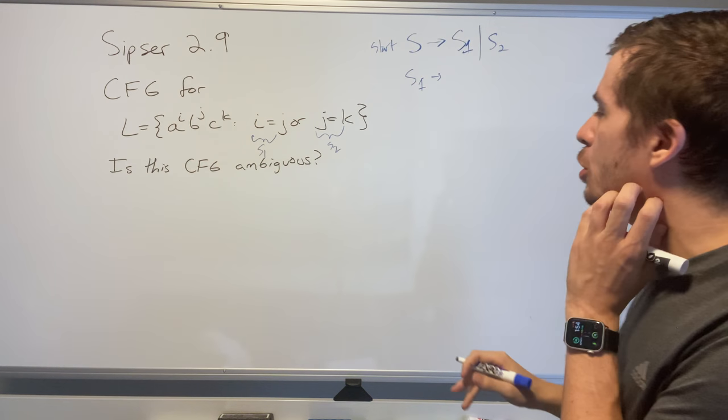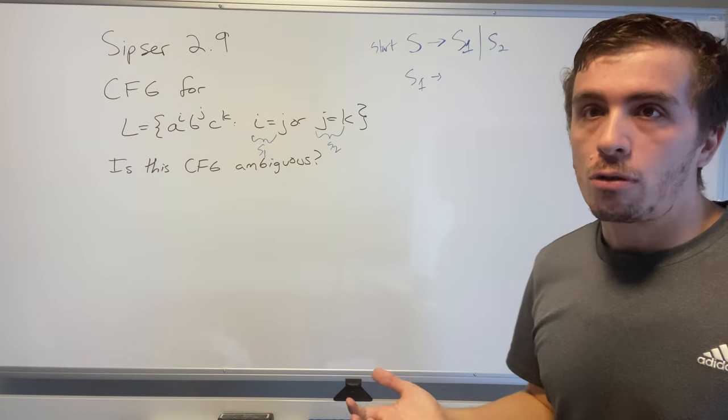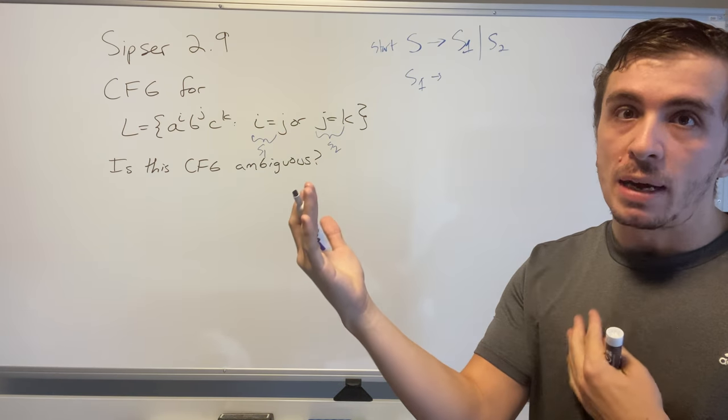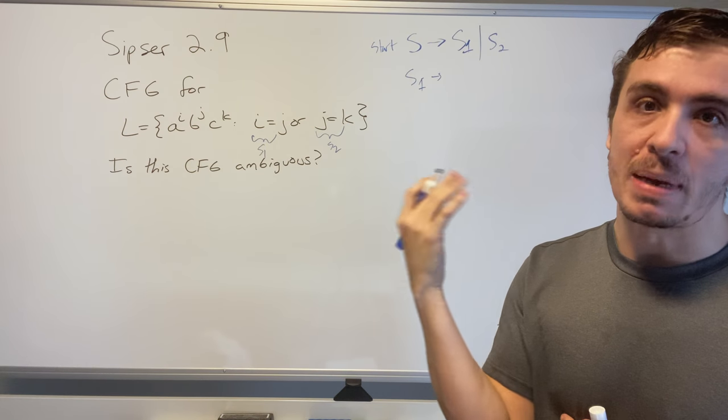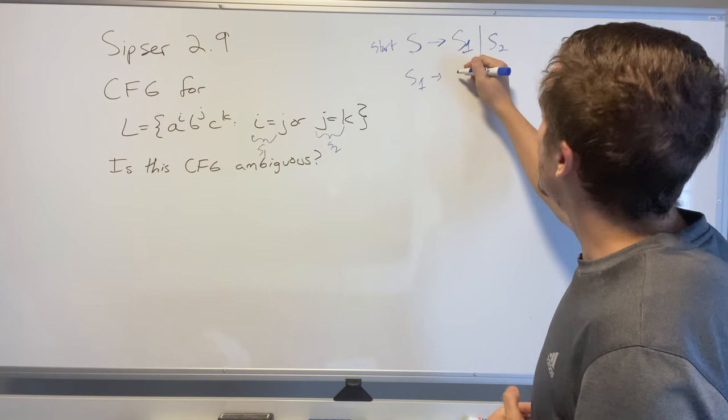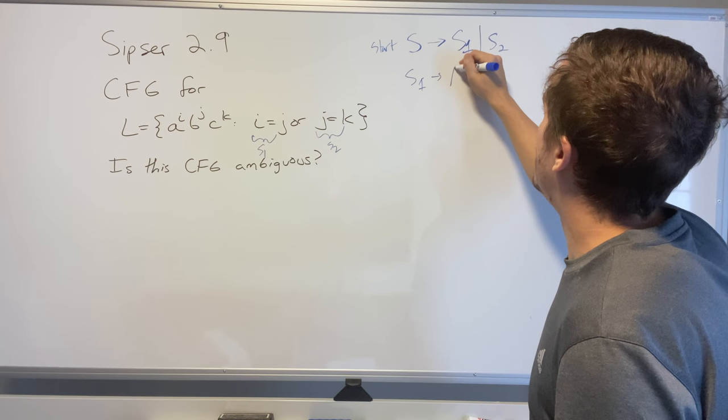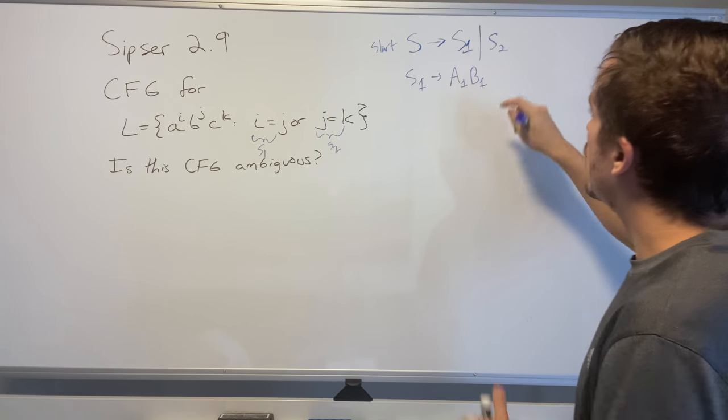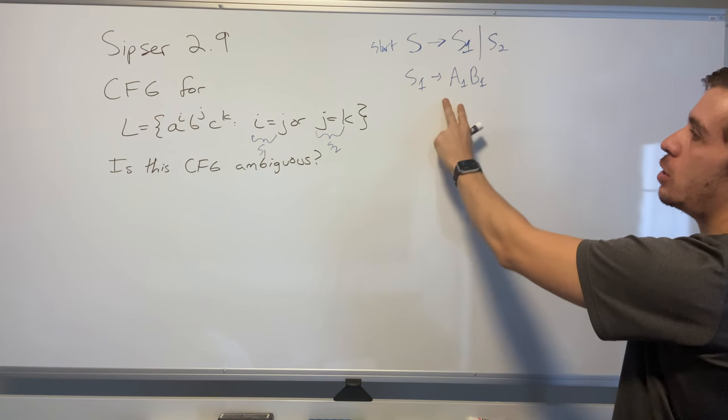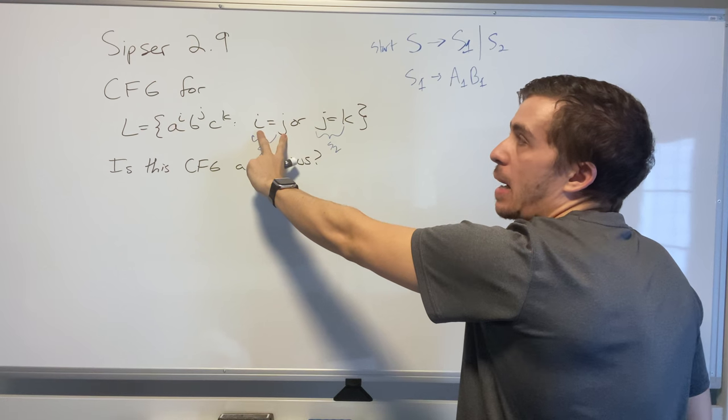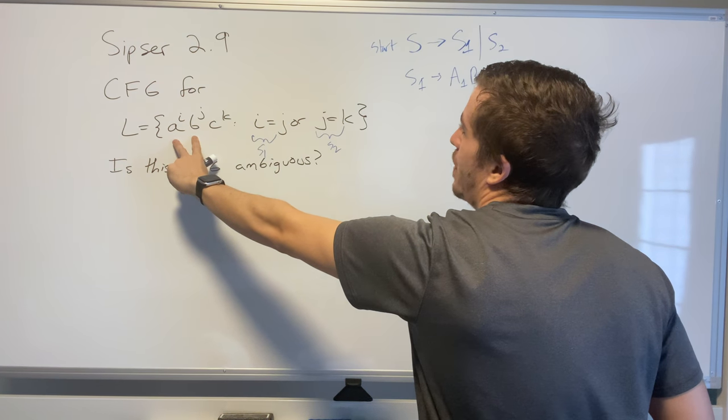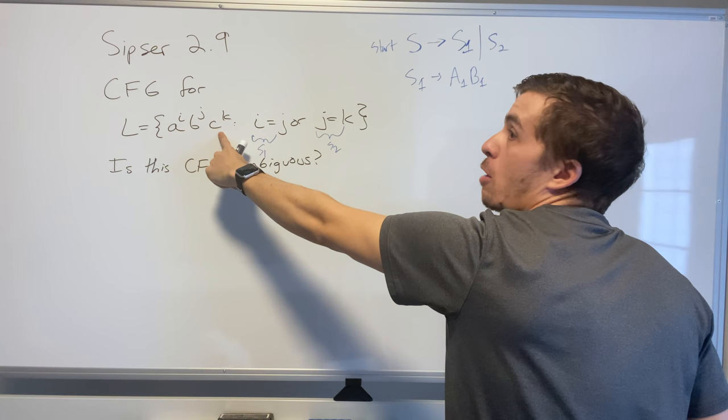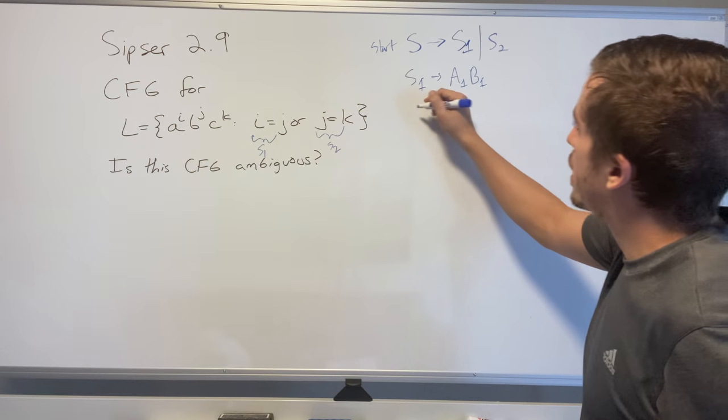For S1, there are many ways to do this. If we know the grammar for having an equal number of a's and b's, we're golden. Then what we can do after the fact is append as many c's as we want. I'm going to have two variables: A1 and B1, where A1 is going to make the equal number of a's and b's, and then the B1 variable is just going to spit out a bunch of c's as many as needed.